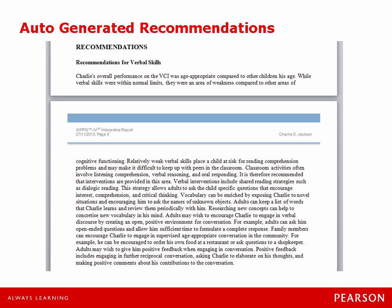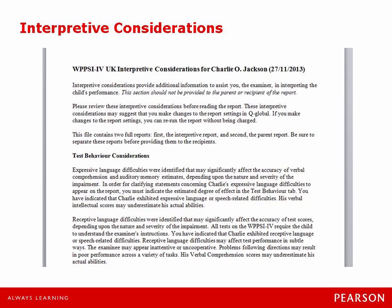Once I've selected all of the recommendations I want to include I just select next. It's going to bring up a screen for how I want the analysis to be run — selecting the mean comparisons, the confidence intervals etc. Additionally I wanted to point out that the first options up here include interpretive considerations and including the parent summary. The interpretive consideration section is going to be a few pages at the beginning of the report and will provide you with additional information to assist your interpretation of the child's performance — for example it includes sections like test behaviour considerations, referral reason considerations, score and interpret considerations as well as recommendation considerations.